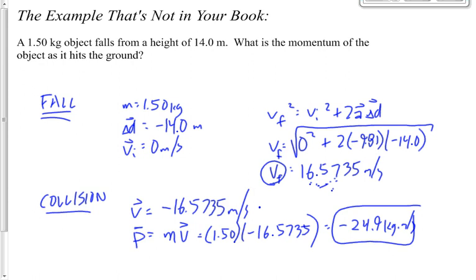We need the velocity at the end of the fall — not the average, not at the top — the velocity at a specific moment in time when it hits the ground. Simon noted that instead of the negative sign, you could write 24.9 downward, and that's fine. On most tests, you're asked for the magnitude of the final momentum anyway, and the magnitude is 24.9. If asked for direction, we recognize it's downward.